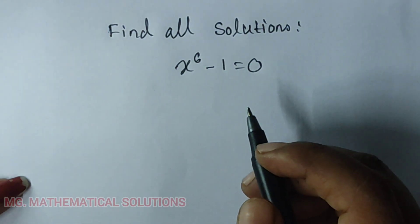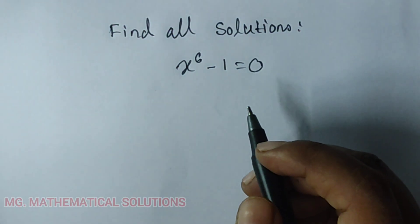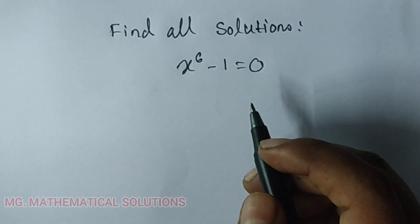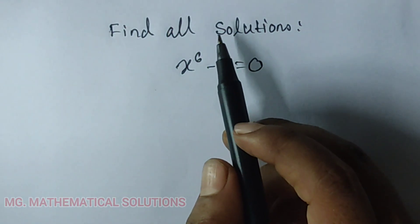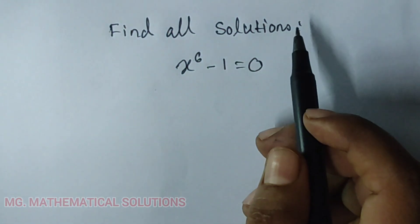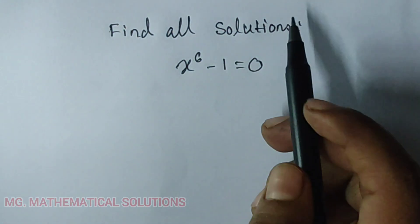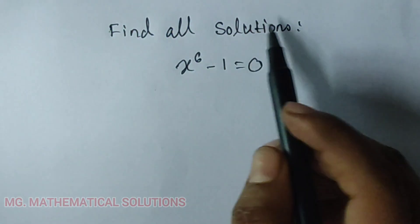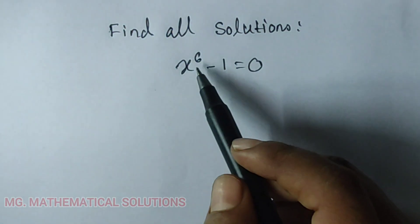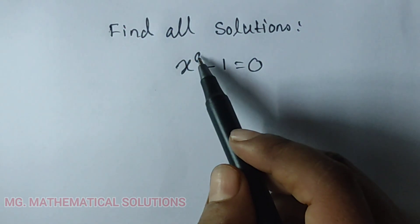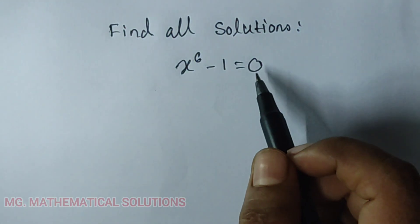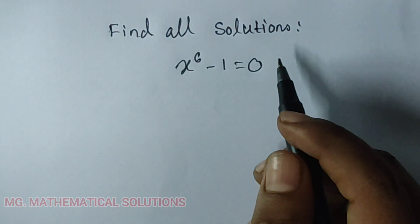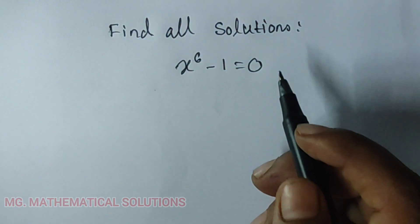Hello students, welcome to our channel NG Mathematical Solutions. Today I solve a math olympiad question. The question is: find all solutions. The equation is x to the power 6 minus 1 equal to 0. That is, every value of x must be determined here.